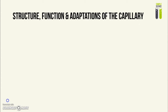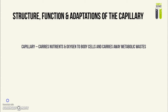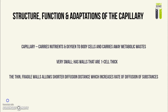Capillaries are very small blood vessels. They carry nutrients such as glucose and oxygen to body cells and carry away waste products of metabolism, for example water and carbon dioxide. Their walls are only one cell thick, which makes them fragile; however, it allows for a shorter diffusion distance, which means that more substances can be exchanged at a time, giving a higher diffusion rate of substances.